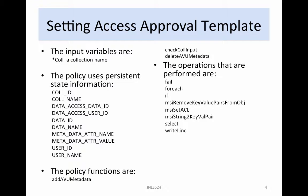The rule HIPAA restrict access dot R is described in Chapter 6.36 of the Policy Examples Workbook. This rule sets the access approval AVU value to zero and removes any public access to the file. The input variables for this rule are star call, a collection name whose files will be examined. The policy uses persistent state information, call ID.